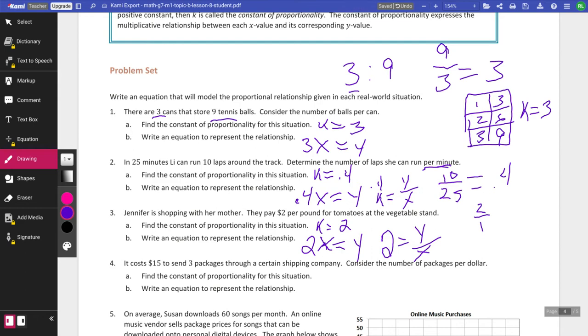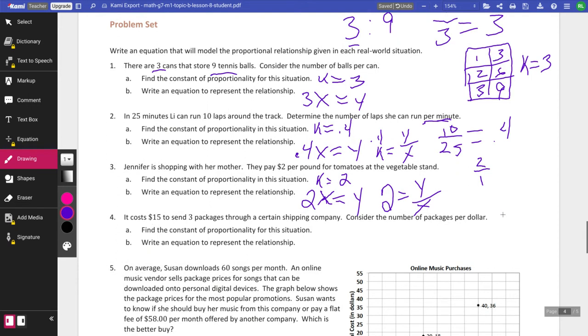It costs $15 to send three packages through a certain shipping company. Consider the number of packages per dollar. Dollar is going to go on the bottom. So it's 15 over 3, which is going to end up equaling 1 fifth or 0.20.